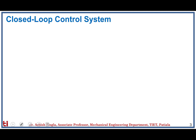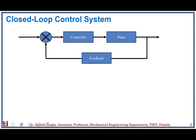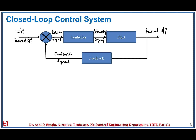In the last session on second order systems, we saw the performance of the plant — how a second order system responds to different kinds of inputs. This is a typical block diagram of a closed loop control system where there is a plant which we want to control. There is a desired input or desired output expected from the plant, and then there is the actual output which is fed back with the help of a feedback device. With the plus and minus sign, there will be an error signal, and the objective of the controller is to minimize this error signal. The output from the controller is called the actuating signal, which is fed to the plant in order to control it.